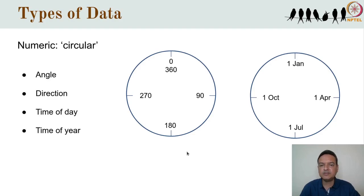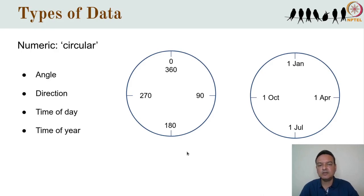In many situations we may be dealing with only a restricted part of the circle. For example, the slope of a mountainside might vary only between 0 and 90 degrees, usually more like 0 and 40 degrees. Within this range we might decide to treat the data as if it were on a linear scale. But if you are dealing with data that go all around the circular scale, then it's best to look up a special branch of analysis called circular statistics.